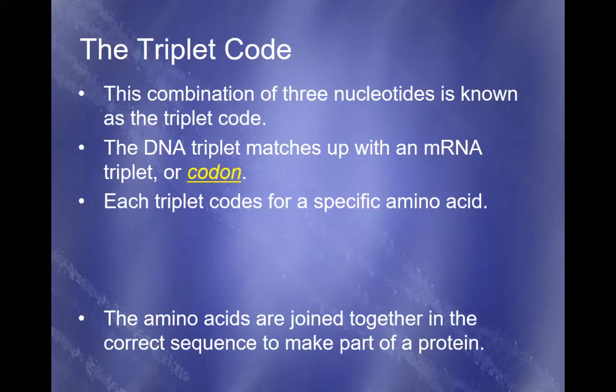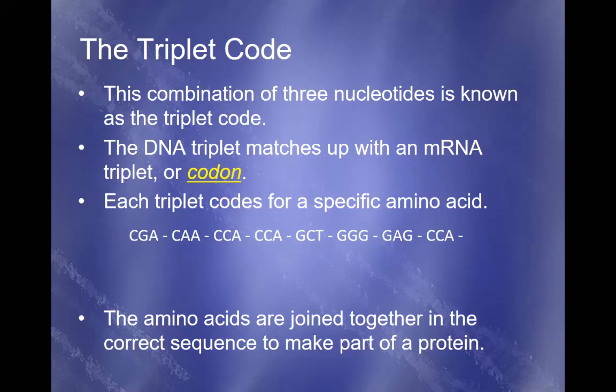In DNA, the group of three bases is known as a triplet, and that triplet is copied into an RNA — specifically, an mRNA triplet known as a codon — and every triplet codes for a specific amino acid. Looking at a particular sequence, we can break it into triplets: GCA, CAA, CCA, CCA, GCT, GGG, GAG, CCA — all broken out in groups of three.